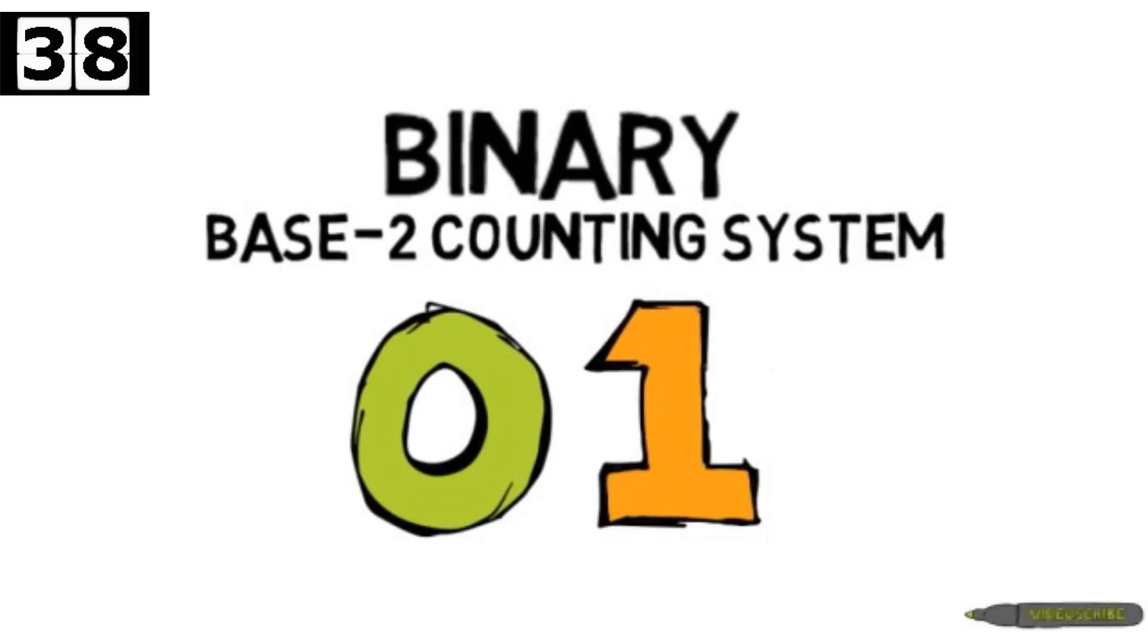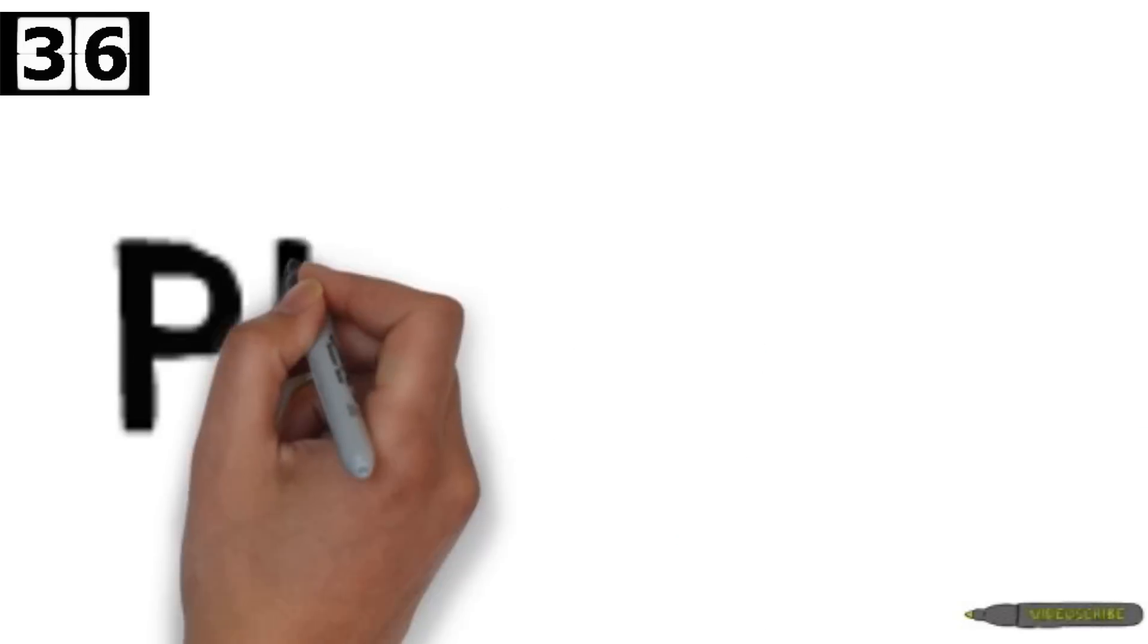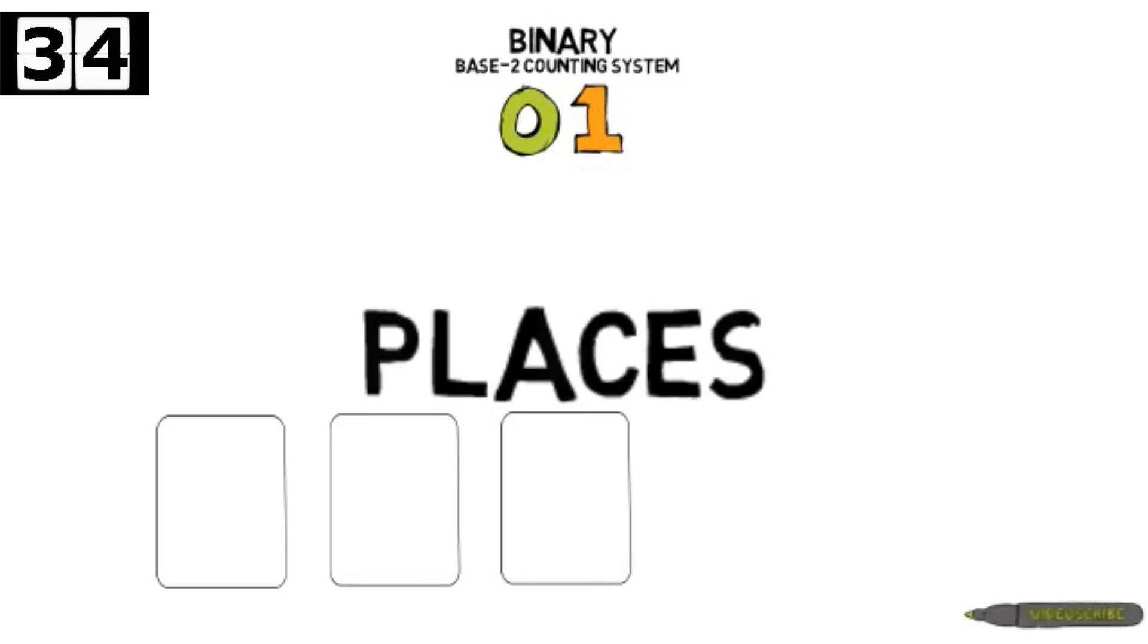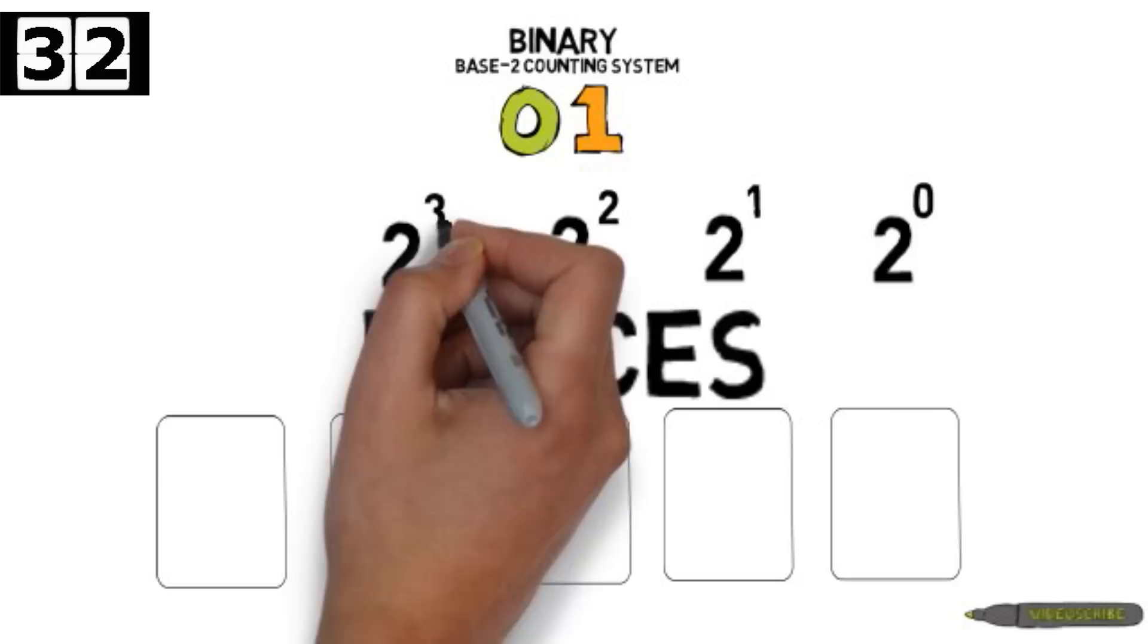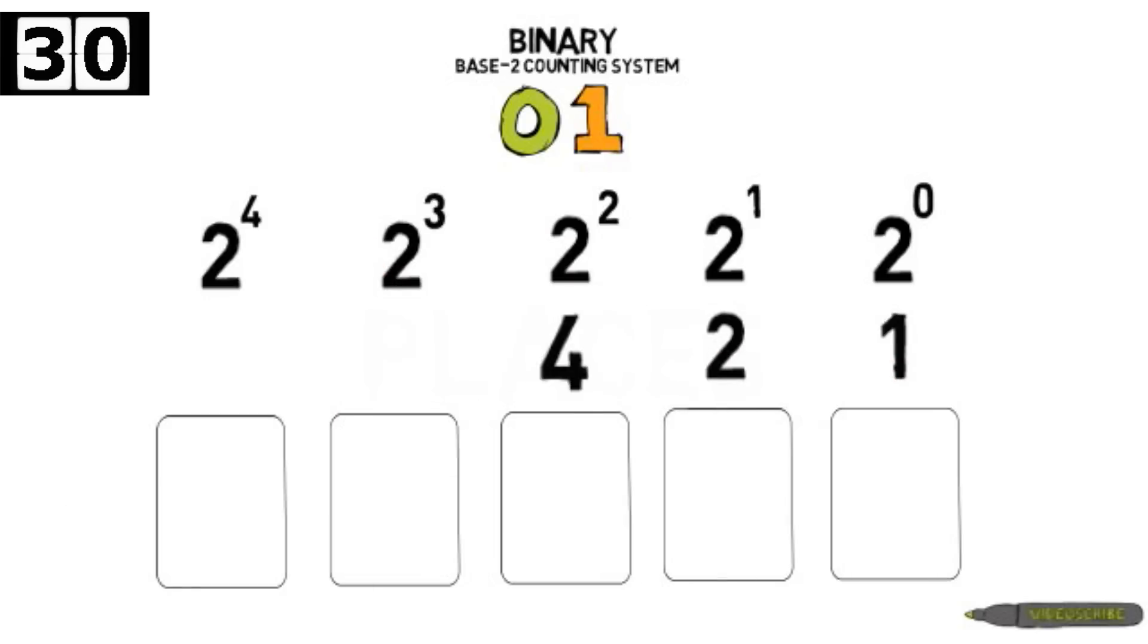Base 2 in binary means that each of the places is a power of 2. For example, 2 to the power of 4, or 2 times 2 times 2 times 2 equals 16.